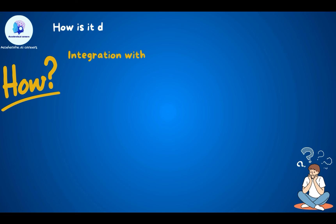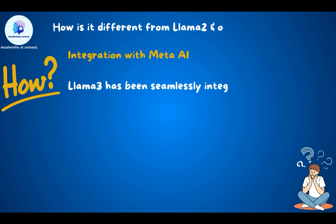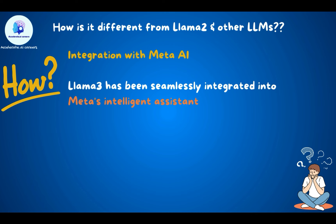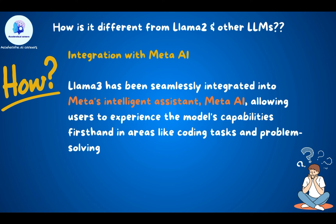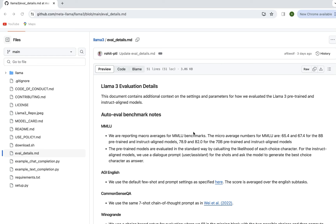One of the most exciting differentiating capabilities is the integration with Meta AI. LAMA 3 has been seamlessly integrated into Meta's intelligent assistant, Meta AI, allowing users to experience the model's capabilities first-hand in areas like coding and problem solving — an integration that was not available with LAMA 2.